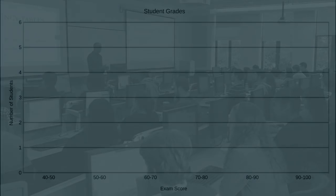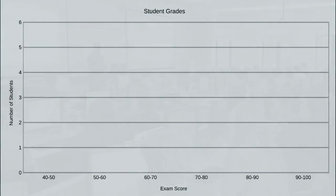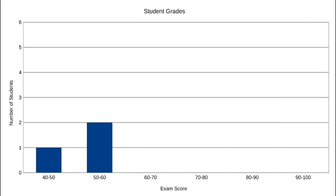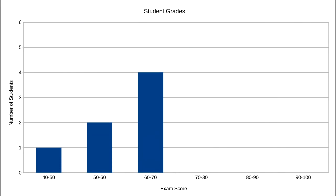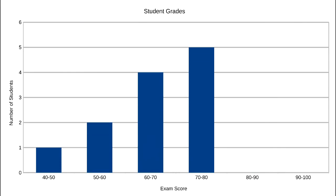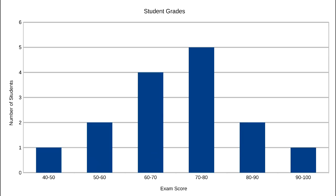To construct the histogram from this table, the intervals are plotted on the X axis, and the number of observations in each interval — or the percentage of observations in each interval — is shown on the Y axis, represented by the height of the bar located above the interval.